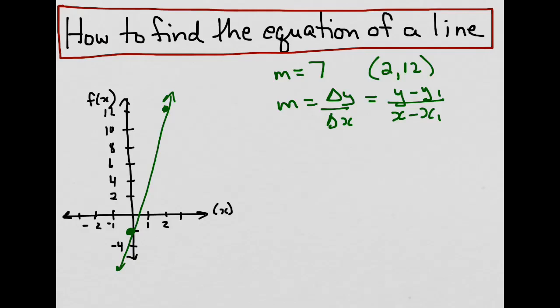What I do know is that x1 is the 2, and y1 is the 12. So let's see what happens when we substitute these into this equation. We get y minus 12 over x minus 2 all equal to 7.